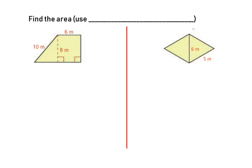Now for a trickier trapezoid: you know both parallel sides but not the full bottom base. There's a rectangle portion giving you 6, but there's a missing piece. When you drop an altitude, it creates a right triangle, so use the Pythagorean theorem to find that missing piece. That's the key strategy here.